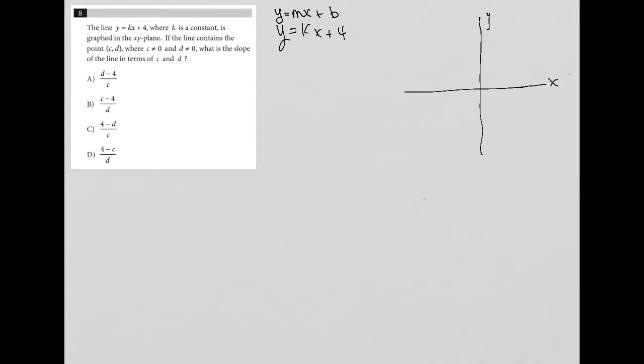If the line contains the point c comma d. Okay, so I don't know where c comma d is, but I do know that means that c represents an x value and d represents a y value.